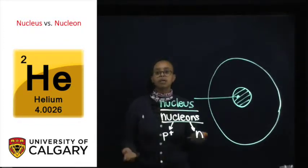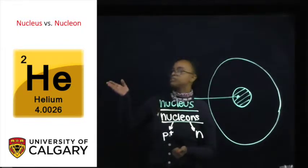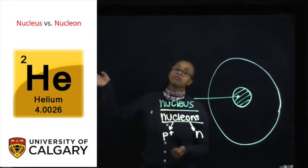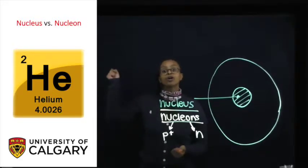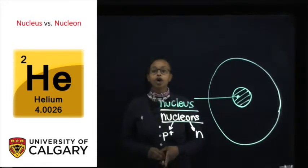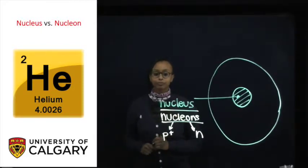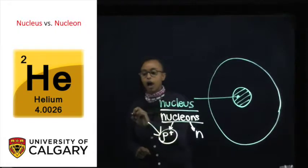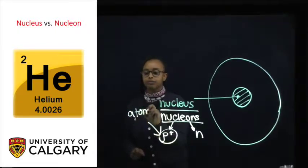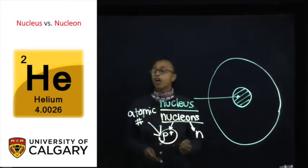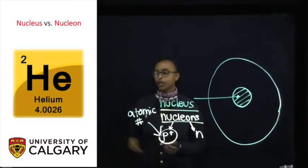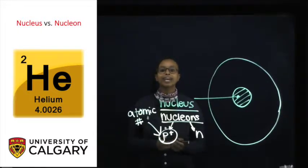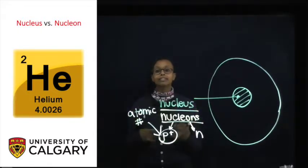So if you were to see a periodic table, you may have seen two numbers, like one right here for helium. The number on the top is where we would find our atomic number, and that atomic number is how many protons we have. And then the bottom number here, 4.0026, is our mass of helium.